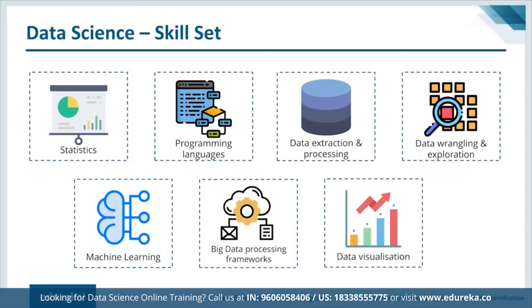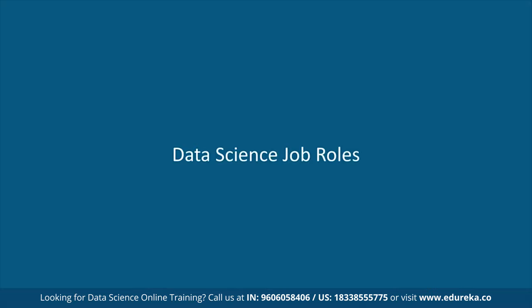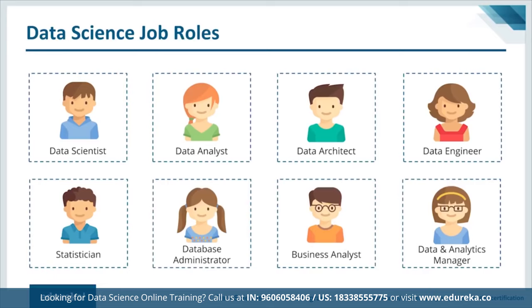Now let's look at the different job roles in data science. Starting with data scientist: they understand business challenges and offer the best solution using data analysis and processing, identifying trends and patterns for better decisions. To become a data scientist, you need expertise in R, MATLAB, SQL, Python, and other complementary technologies, and a higher degree in mathematics or computer engineering helps. Next, data analysts are responsible for visualization, processing massive amounts of data, munging, and performing database queries. One of the most important skills of a data analyst is optimization — creating and modifying algorithms to pull information from large databases. Required technologies include SQL, R, SAS, and Python.